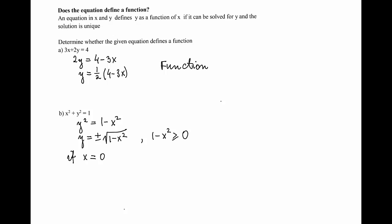For example, if x equals 0, then y is going to be plus or minus square root of 1 minus 0 squared, which is the square root of 1, which is plus or minus 1. So for x equals 0, there are two values of y.